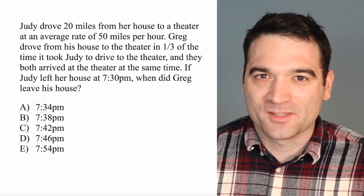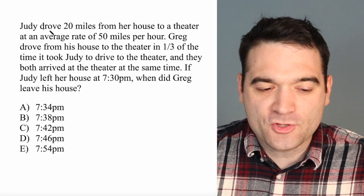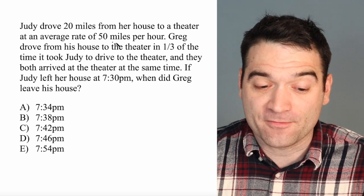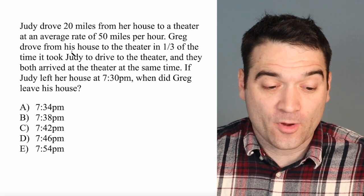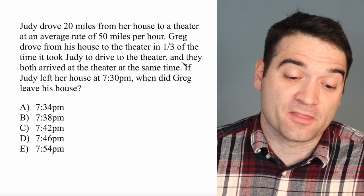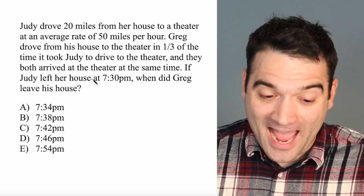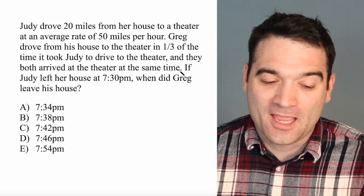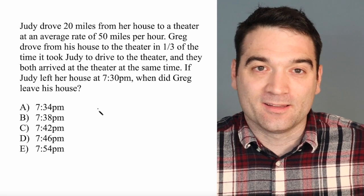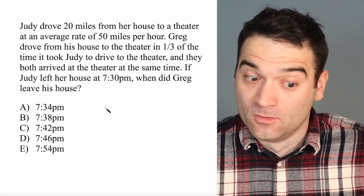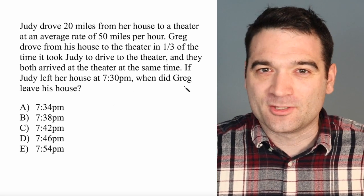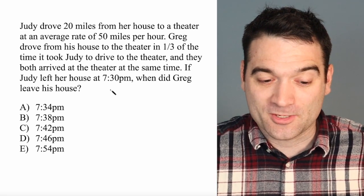Here's a GRE word problem. Let's take a look. Judy drove 20 miles from her house to a theater at an average rate of 50 miles an hour. Greg drove from his house to the theater in one-third of the time it took Judy to drive to the theater, and they both arrived at the theater at the same time. If Judy left her house at 7:30 p.m., when did Greg leave his house? There's a lot going on here, but it can really all be boiled down to one equation. Do you know what that equation is?